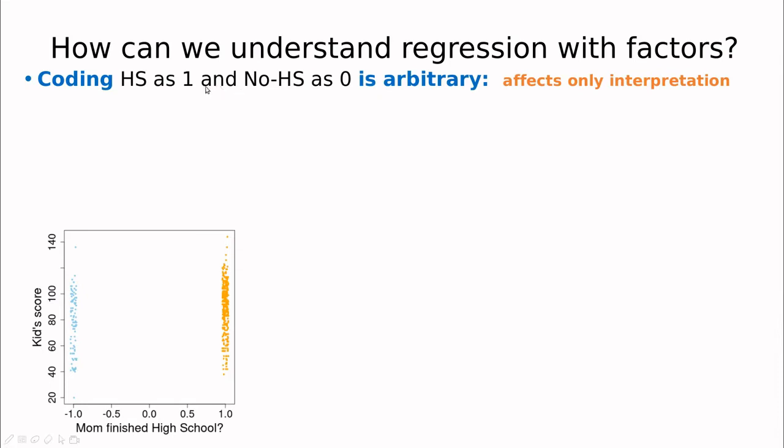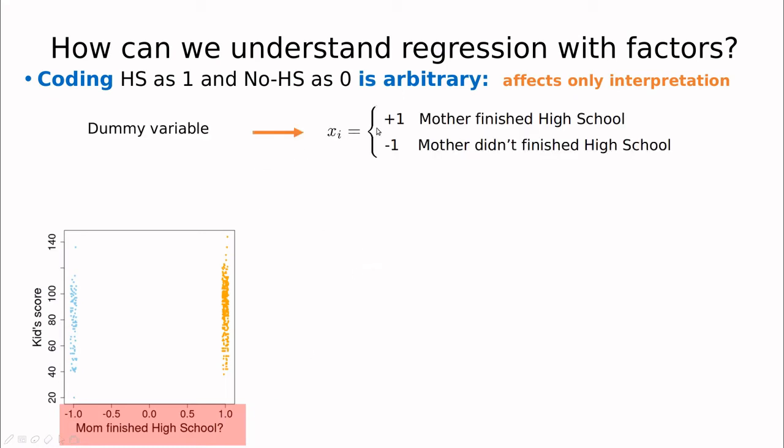Of course, coding high school with 1 and no high school with 0 is arbitrary. We could do different codings, but this is only affecting interpretation. So let's change that. Imagine that instead of saying that mom has finished high school is 1 and the other way is 0, we replace that by minus 1 and 1. Now our dummy variable would be plus 1 for mother finished high school and minus 1 for mother didn't finish high school.